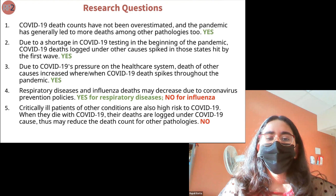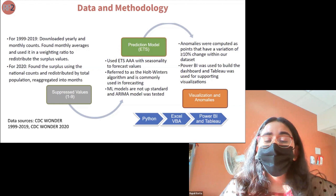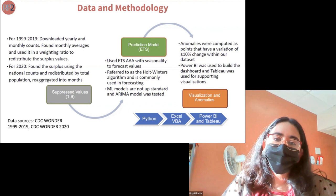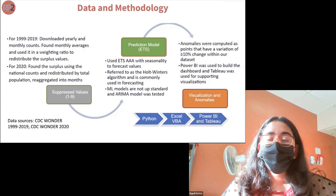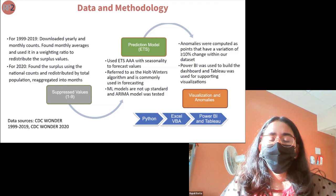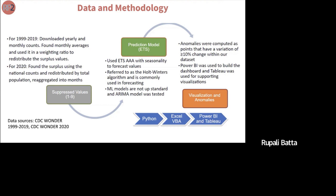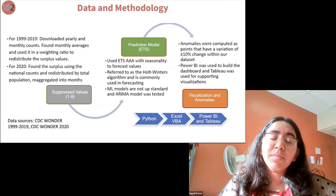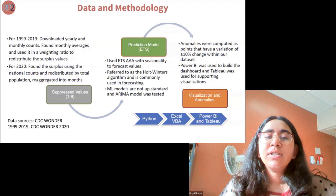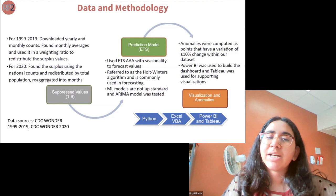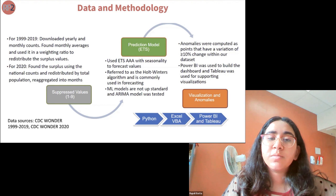The CDC released data on 11 causes of death from 1999 to 2019 by state, year, and month, plus a preliminary 2020 dataset including COVID. Our main objective was to calculate what each cause of death should have been per month in each state and compare it to what it actually was. Our first hurdle was suppressed data: the CDC suppresses death counts for any cause when the count is below 10 for privacy reasons. About 7% of our dataset was suppressed, mostly in states with small populations. Our solution was to average monthly counts by cause and redistribute the surplus.